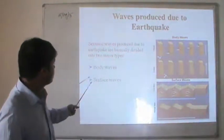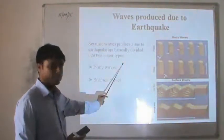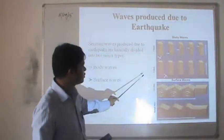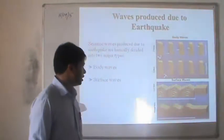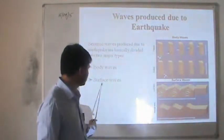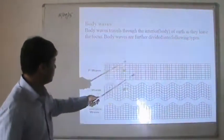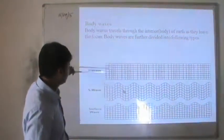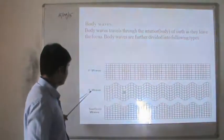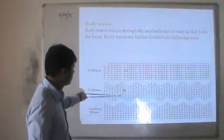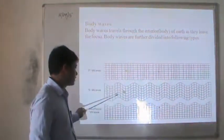Seismic waves produced by earthquakes are divided into two major types: body waves, which travel through the body of the Earth, and surface waves, which travel along the surface. Examples of body waves are primary (P) and secondary (S) waves. Primary waves travel in a longitudinal direction while secondary waves travel in a transverse direction.